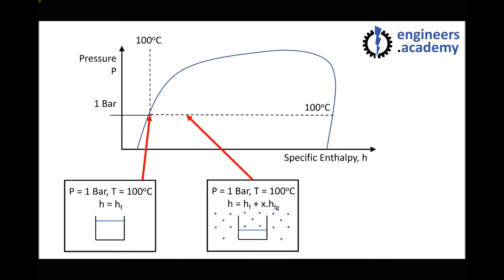The way we determine enthalpy for wet steam is: H equals HF plus X times HFG, where X is the dryness fraction and HFG is the difference between the enthalpy of our saturated water on the left-hand side and the enthalpy of our dry saturated steam on the right-hand side. So at the point indicated, we have a dryness fraction of around 0.25.